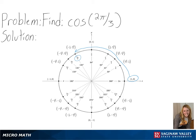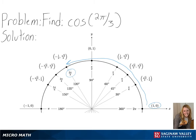Since we are finding the cosine value, we will be taking the x-coordinate of our point, which in this case is negative 1 half. So for cosine of 2π over 3, we get negative 1 half as our final answer.